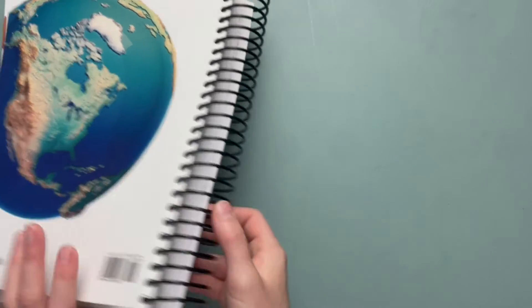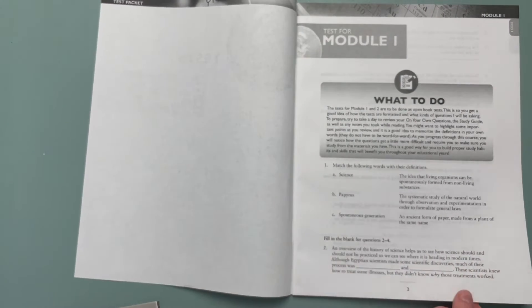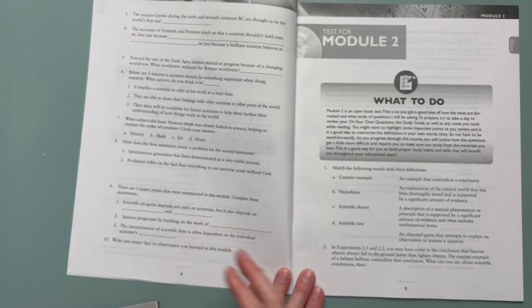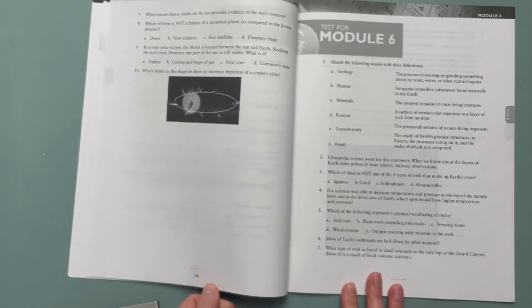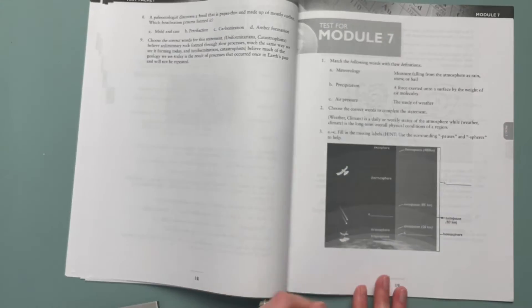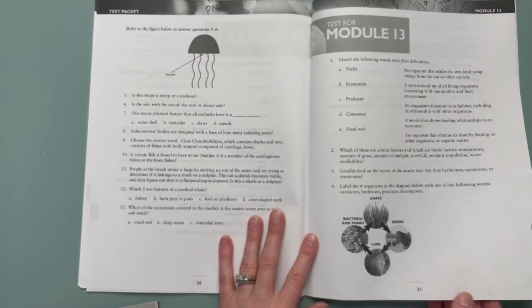All right so that's it for the notebook. Last thing I'm going to go over quick is just the tests. So this is the test for module one just to give you an idea. It's just a front and back sheet. Looks like each test is about 10 to maybe 15 questions long so it's not really overwhelming. There's no colored pictures in this book, it's just black and white.